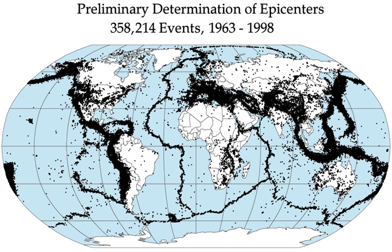The number of seismic stations has increased from about 350 in 1931 to many thousands today. As a result, many more earthquakes are reported than in the past, but this is because of the vast improvement in instrumentation rather than an increase in the number of earthquakes. The United States Geological Survey estimates that since 1900, there have been an average of 18 major earthquakes of magnitude 7.0 to 7.9 and one great earthquake of magnitude 8.0 or greater per year, and that this average has been relatively stable.